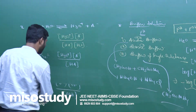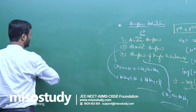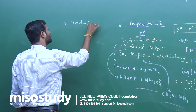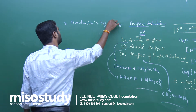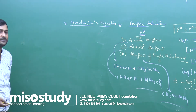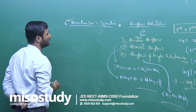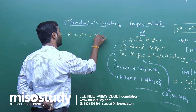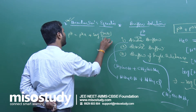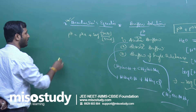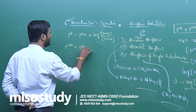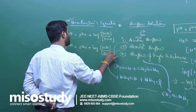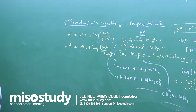To find the pH of acidic and basic buffer, we have Henderson's equation. For acidic buffer: pH equals pKa plus log of salt concentration upon acid concentration. For basic buffer: pOH equals pKb plus log of salt upon base. By using this method, you can solve problems related to buffer solution.